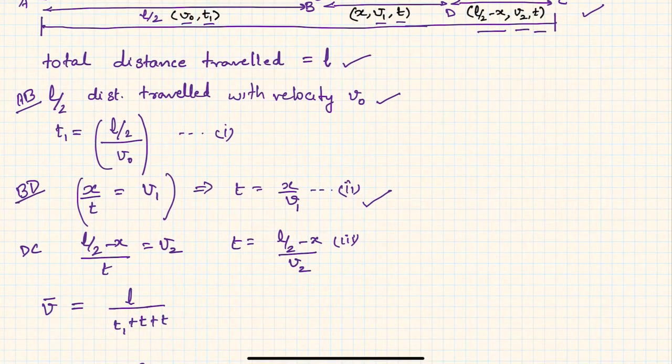Similarly, DC: distance traveled is l/2 minus x divided by time is v2. Mind you, all these are uniform velocity cases, so we are able to write these equations. Now t equals l/2 minus x divided by v2, so we found t.